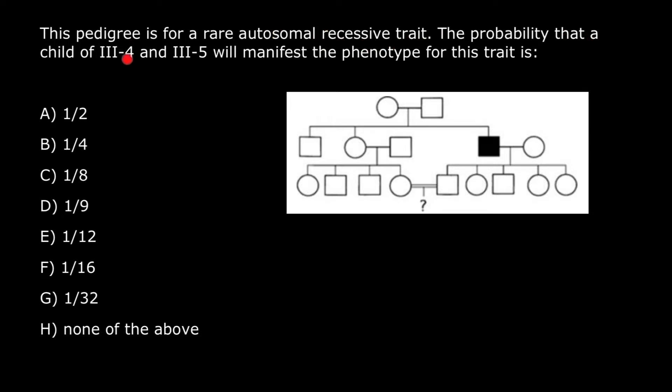The probability that a child of III-4 and III-5 will manifest the phenotype for this trait is: